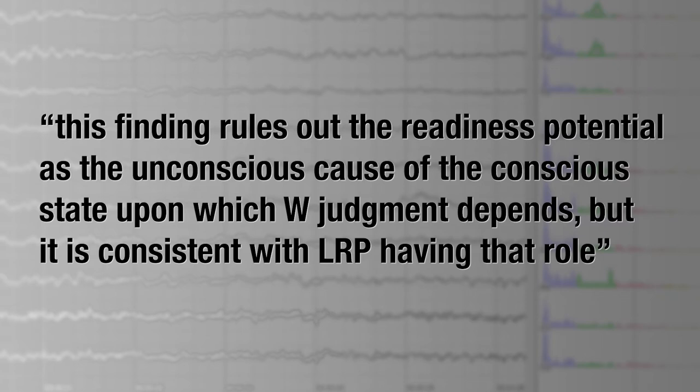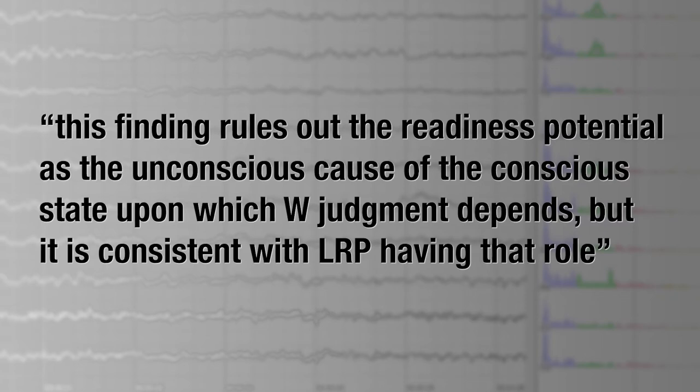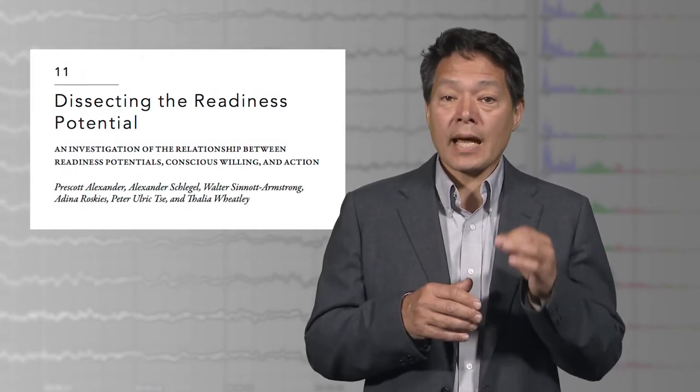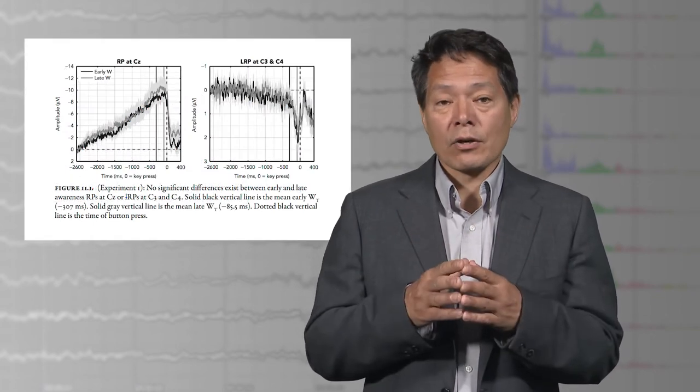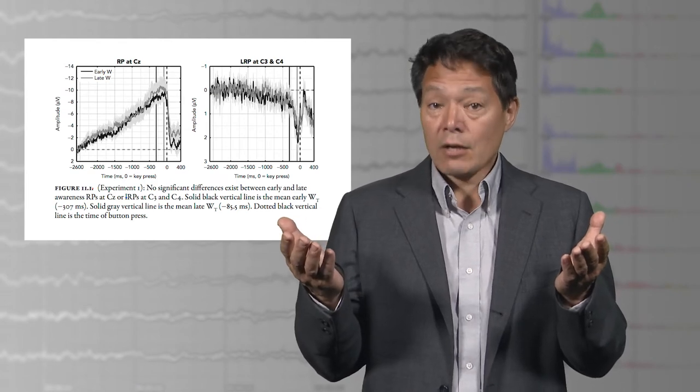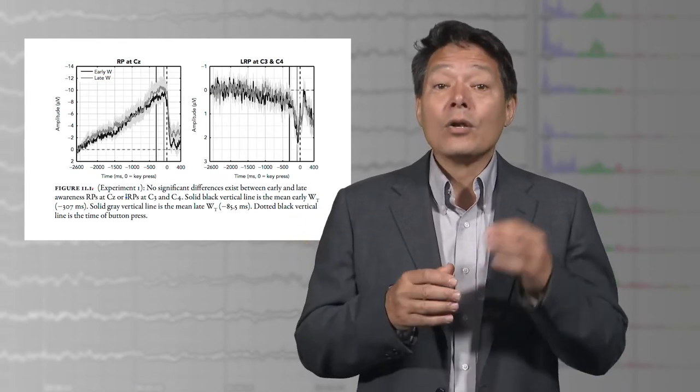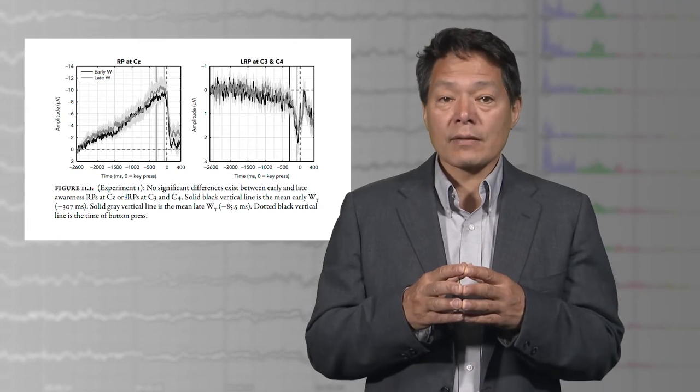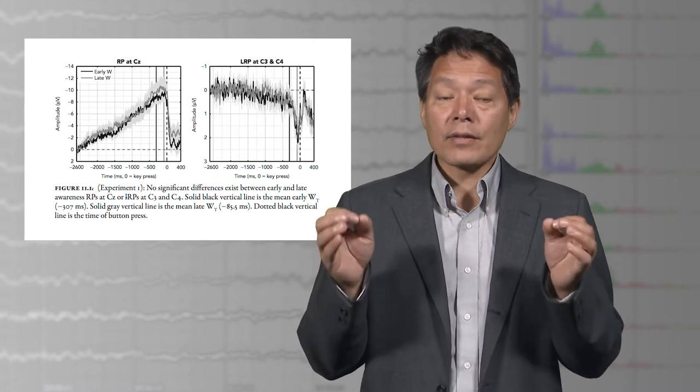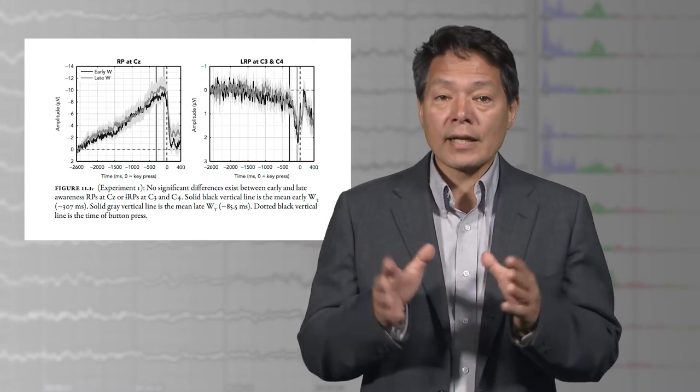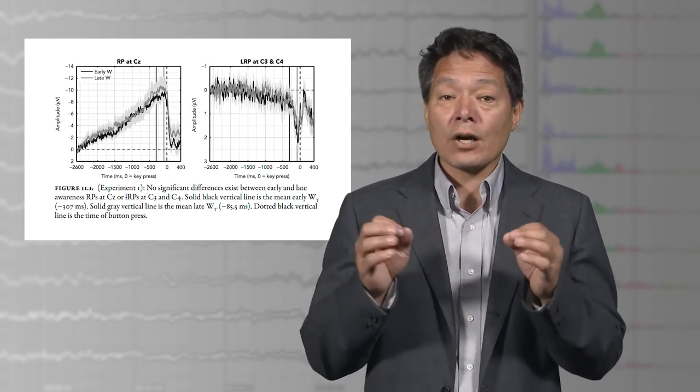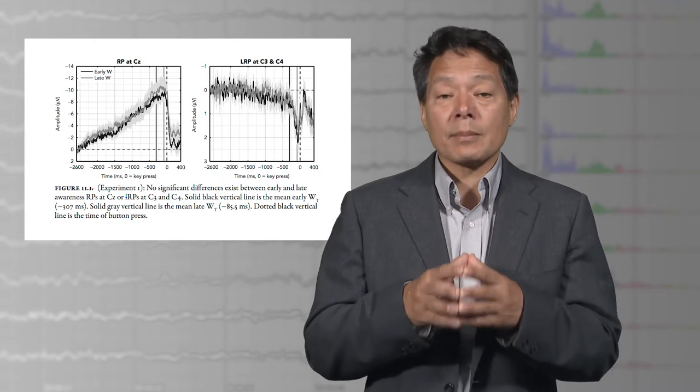But it is consistent with the lateralized readiness potential having that role. My group carried out an exact replication of their study with many more subjects, and in our hands, we found neither a temporal correlation between the onset of the readiness potential and the moment of conscious willing, time w, replicating Haggard and Eimer, nor did we find such a temporal relationship between the onset of the lateralized readiness potential and the timing of conscious willing. Thus, following the same logic, we concluded that neither the readiness potential nor the lateralized readiness potential is likely to be an unconscious cause of the conscious state upon which w judgment depends.